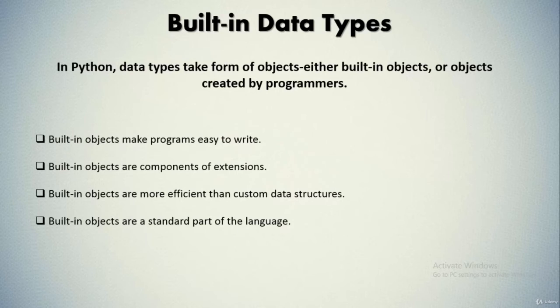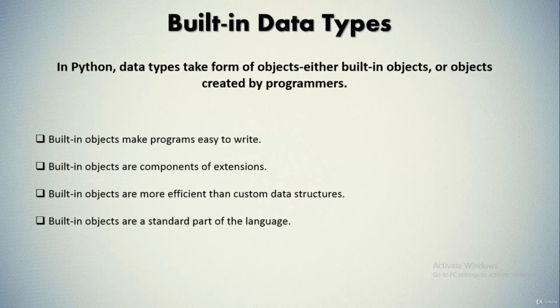Also, built-in objects are a standard part of the language. In some ways, Python borrows both from languages that rely on built-in tools and languages that rely on the programmer to provide tool implementations or a framework of their own — for example, C++. Although you can implement unique object types in Python, you don't need to do so just to get started. Because Python's built-ins are standard, they're always the same, whereas proprietary frameworks tend to differ from site to site.